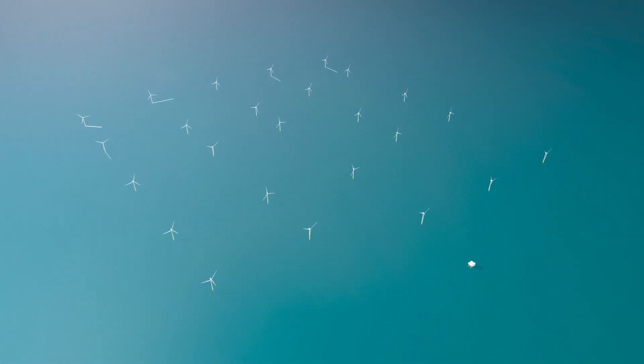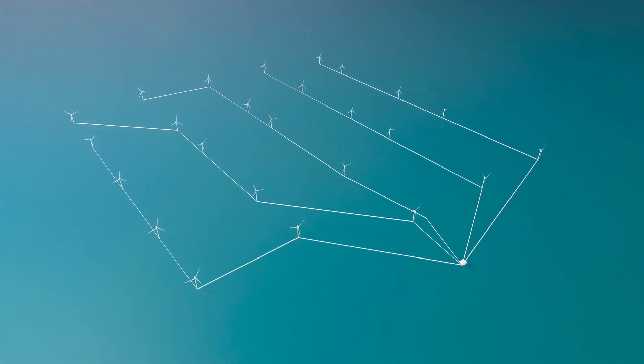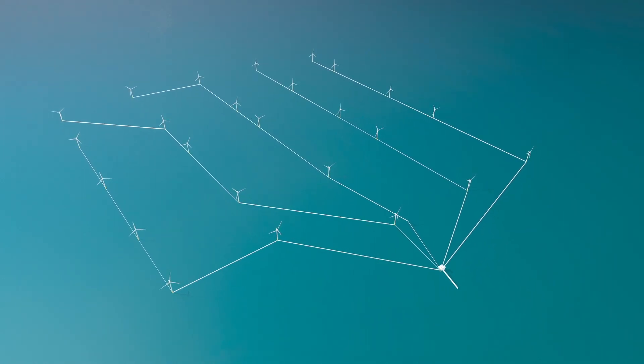The electricity generated from all of the turbines in the wind farm is then fed to a single offshore substation, which then transports the energy to shore via high-voltage cables.